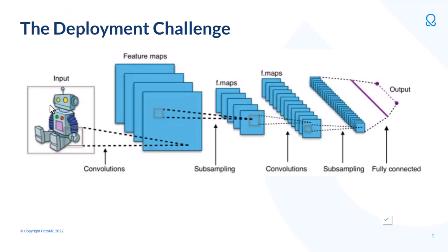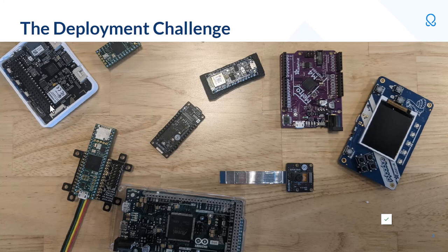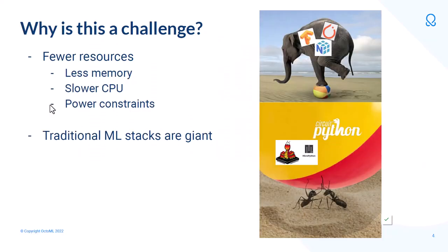To start with something near and dear to probably most of our hearts here: deploying a very simple CNN onto a very tiny device like the one shown here. Why is this challenging?